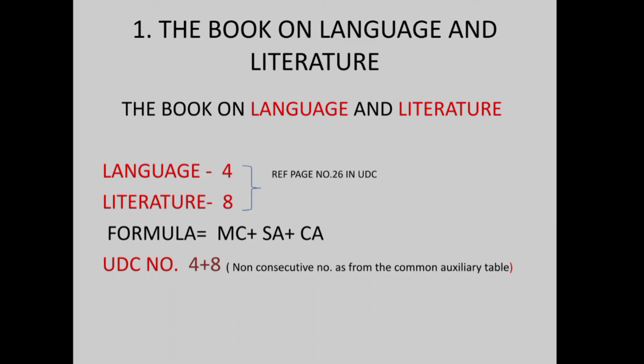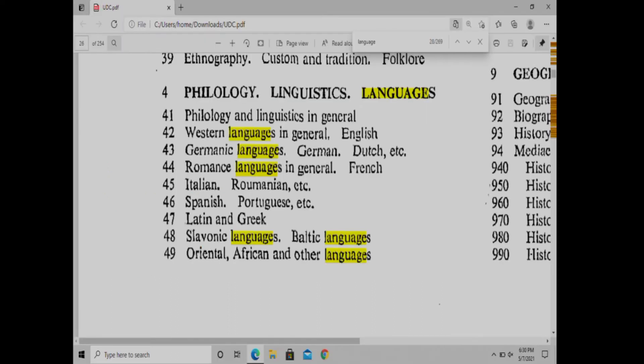Let's look at the language. Language is 4. Literature is 8. Page number 26 of the UDC PDF.